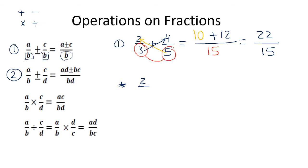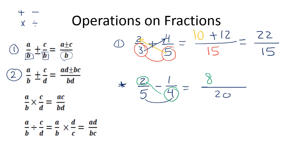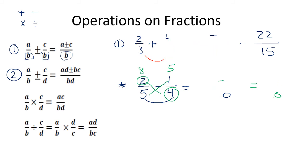In the case of subtraction — for example, two over five minus one over four — we start by multiplying five by four to get 20. Then four multiplied by two is eight, and five multiplied by one is five. So it's eight minus five, which equals three over 20. This is how to add and subtract two fractions with or without the same denominator.